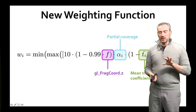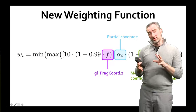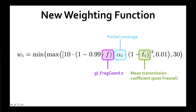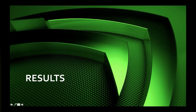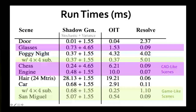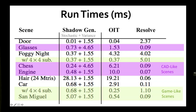There's a new weighting function that makes phenomenological transparency more robust than previous weighted blended transparency methods. The major elements affecting each surface's contribution are depth (gl_FragCoord.z), partial coverage, and the mean amount of transmission going through the surface. Now let's look at some results.